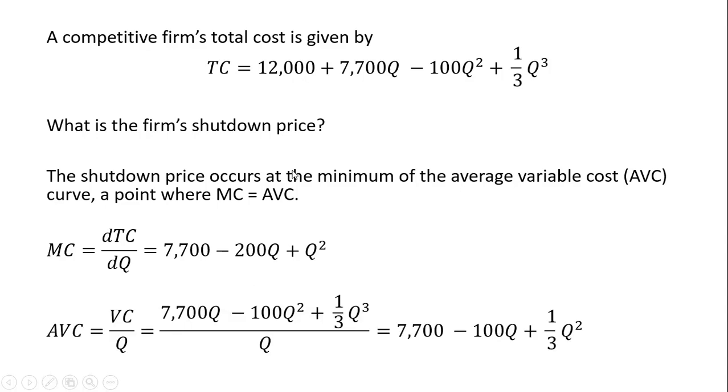Our average variable cost is going to be variable cost. Variable cost is going to be everything with a Q in it. This 12,000, that's a constant. That is going to be fixed cost. So the remainder of this total cost equation will be variable cost.